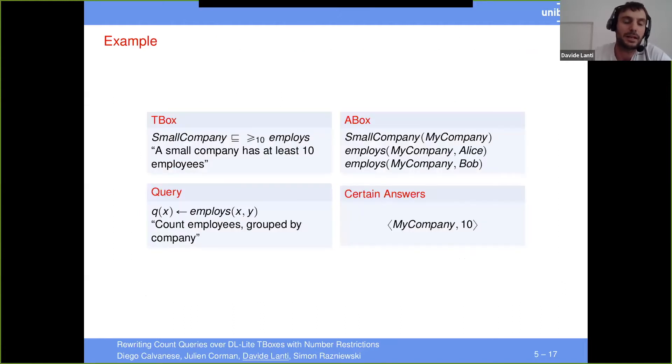Here I have an example of all of this. So in T-box, for instance, we can express things like a small company has at least 10 employees. And then imagine that I have explicit knowledge only about two employees, namely Alice and Bob. And then I want to count the number of employees grouped by the companies. And here the answer, the certain answer would be my company 10 because under every model of the interpretation, I need to have at least 10 employees.